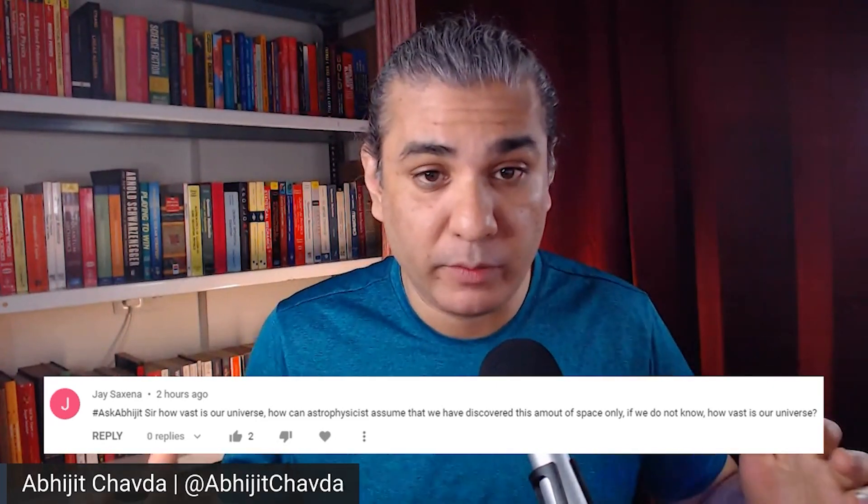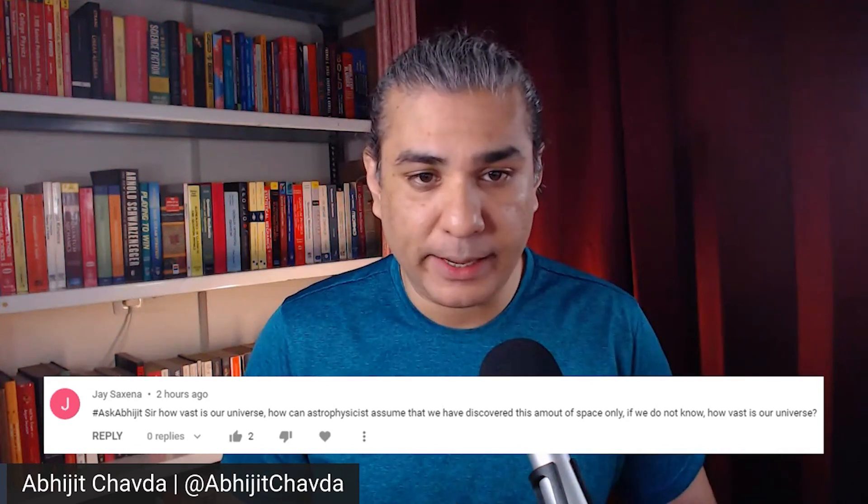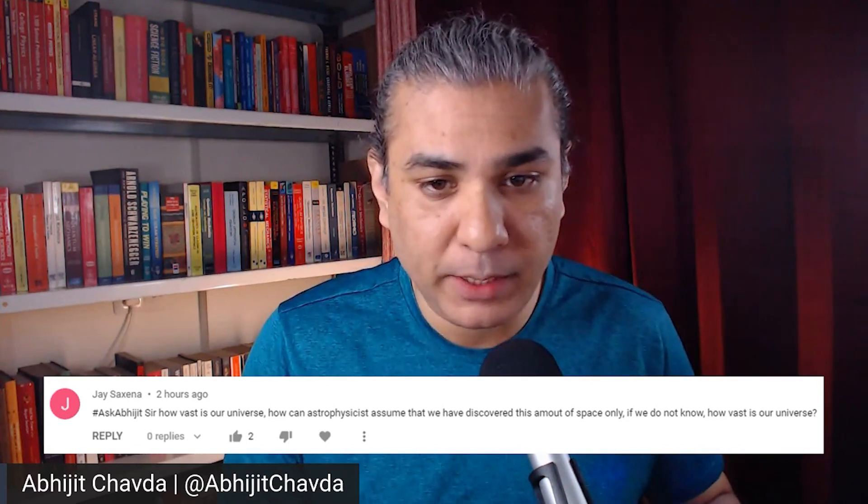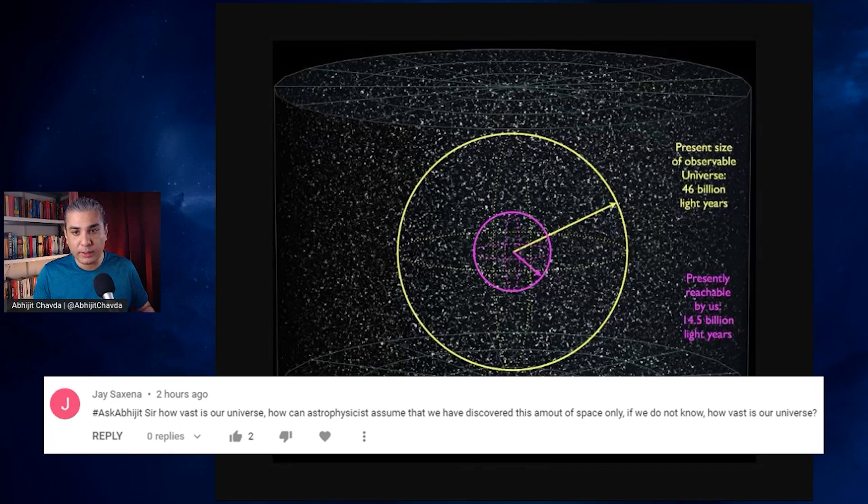So we have the cosmic horizon, which is the observable universe, which is the furthest we can look with any instrument that we have, and that's about 46 billion light years away. So let me share an image with you. So this here is an approximate representation of this. So the present size of the observable universe is about 46 billion light years. We know this because that's how far we can see.